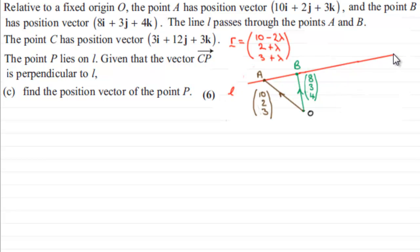So, just to recap, we've got our line L. We were told that we've got the points A and B on the line, and they have position vectors 10, 2, 3 and 8, 3, 4 respectively.